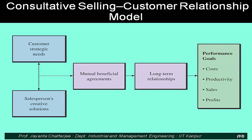In diagrammatic form, this is a model of consultative selling based on the customer relationship approach. On the left hand side, you have customer strategic needs and creative solution as inputs. From there, you lead to a mutually beneficial agreement, develop the long-term relationship, and achieve sales performance goals — keeping costs down, improving productivity, increasing sales, and increasing profits.